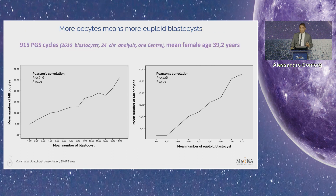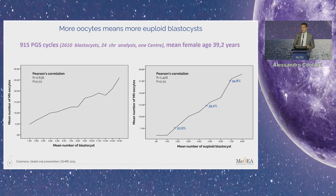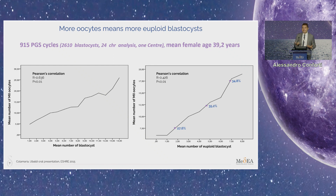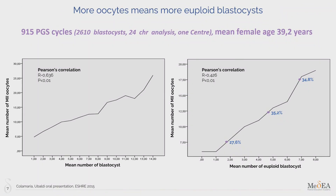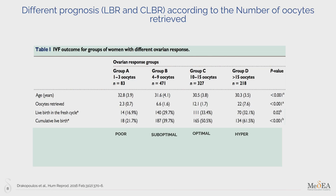Retrieving more eggs also means, as was clearly explained before by Professor Nsukhara and Professor Ubaldi, that we have more chance to obtain euploid blastocysts. So more oocytes means more euploid blastocysts. That's why it's very important to take into account how many eggs we could achieve from the patient we are treating, and we know that the cumulative live birth rate dramatically changes according to the number of eggs that we retrieve.